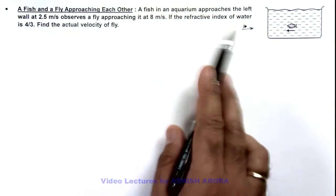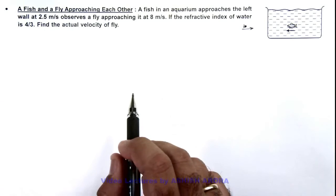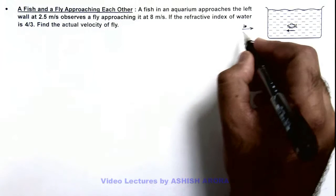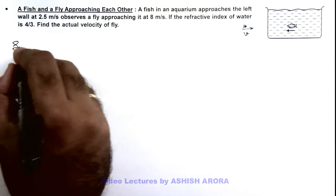If the refractive index of water is 4 by 3, we are required to find the actual velocity of this fly. In this situation we can consider the velocity of fly is say v. And here in solution we can write: